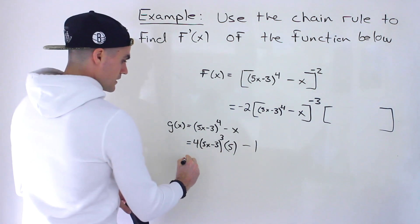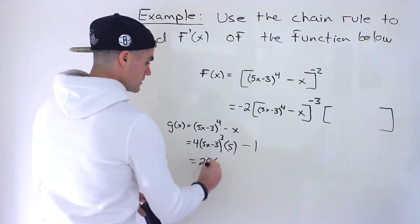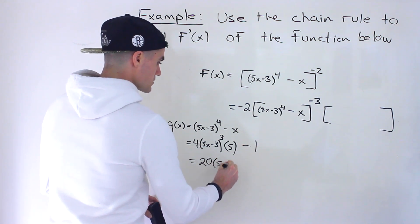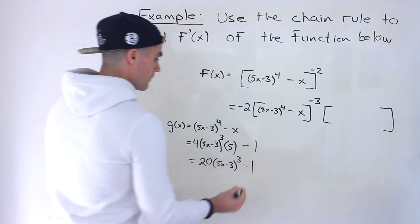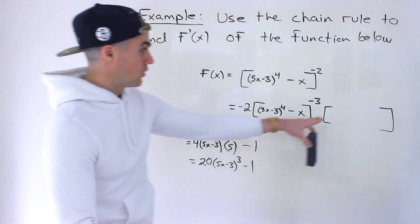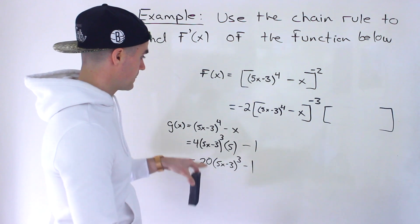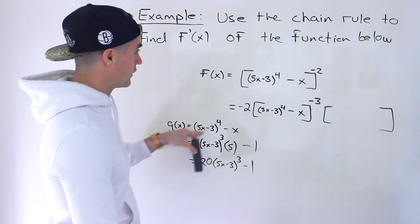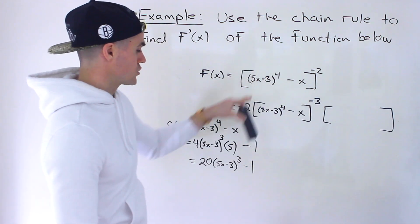And so simplifying this here, notice 4 times 5 gives us 20. And we've got (5x - 3)^3. And then we have minus 1. So this would go over here, right? That's this here. It's the derivative of that inner function, this function right here.